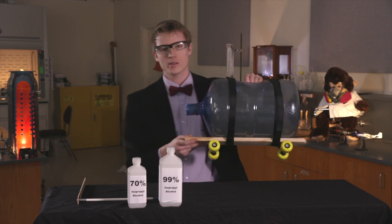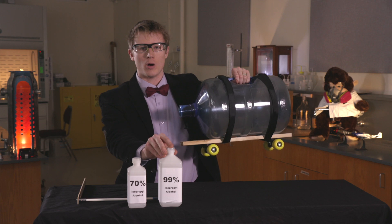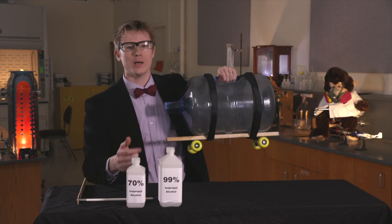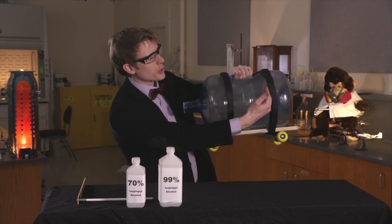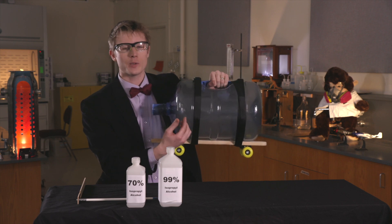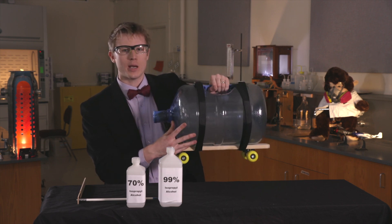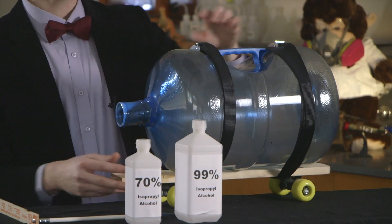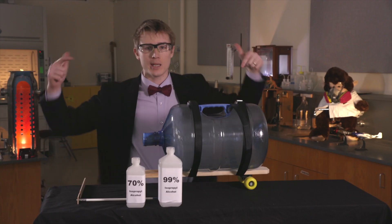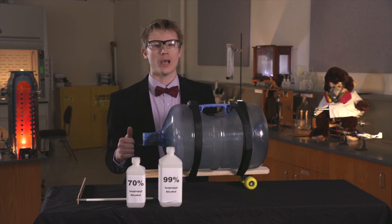So in this case, the bottle moved more slowly than it did with the 99% isopropyl alcohol. This is because the 70% isopropyl alcohol is less reactive. Because it's less reactive, the flame moves more slowly across the bottle. We call the speed this flame moves the flame speed. With a lower flame speed, we get less thrust out of the bottle. This idea of flame speed is very important for jet engines. So important that we're researching it here at Oregon State University. So let's hop over to my lab and check it out.